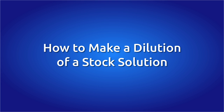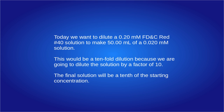Today, we will discuss how to make a dilution of a concentrated stock solution. In this example, we want to dilute a 0.20 millimolar FD&C Red Number 40 solution to make 50 milliliters of a 0.020 millimolar solution.